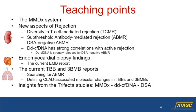We'll talk about the MMDX system and highlight a few aspects of rejection. One is sub-threshold antibody-mediated rejection in kidney, and DSA-negative antibody-mediated rejection. Cell-free DNA has strong correlations with active rejection, even when the DSA is negative. We'll also cover the endomyocardial biopsy, the transbronchial biopsy, and the mucosal biopsies that Kieran Howard introduced. I may also have time to get into the trifecta studies.